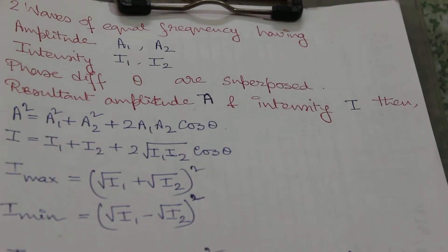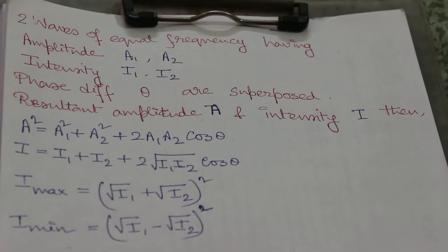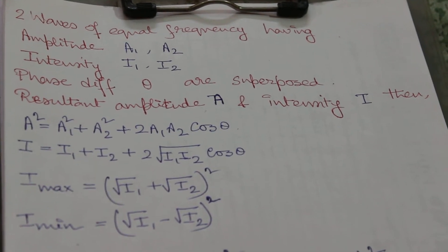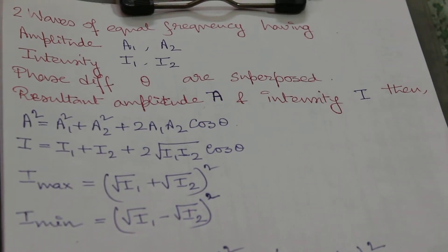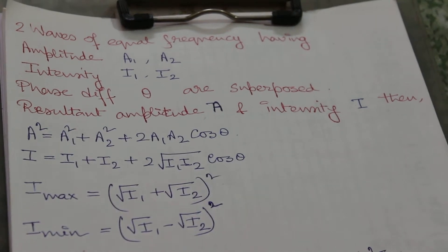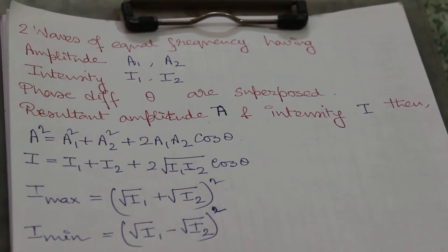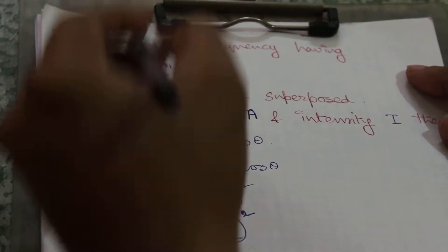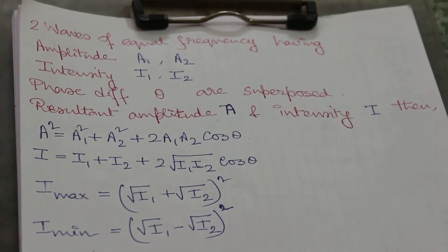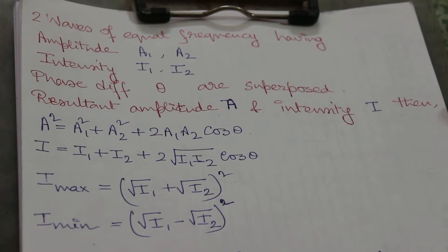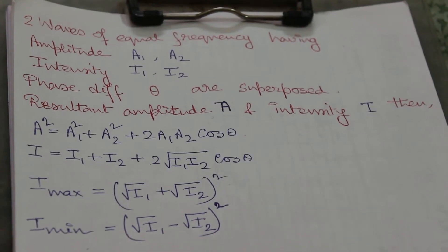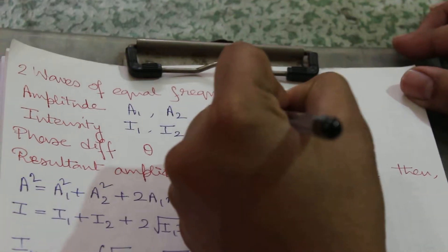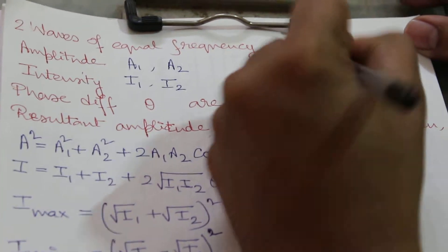Welcome to our channel Learn to Win. Today our topic is the superposition of waves. Let there be two waves having equal frequency that get superposed. The amplitude of one is a1, the other is a2, and their intensities are i1 and i2 respectively. We know that intensity is proportional to amplitude squared, which we will use here.